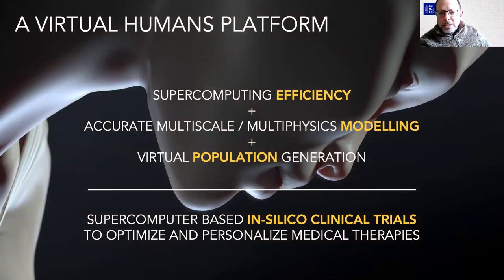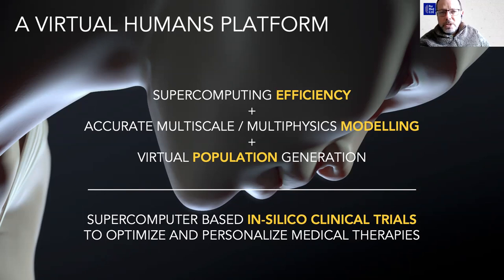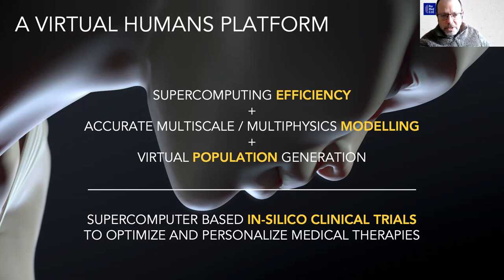What we are developing is a virtual humans platform. By combining three things: first, supercomputing efficiency in order to use large-scale computing facilities; second, accurate multi-scale, multi-physics modeling, something that can allow you to simulate very complex problems; and third, virtual population generation. This third one is very important because it will allow you to create virtual humans on which you can test a given therapy. By combining these three things, what we are going to have is a supercomputer-based in-silico clinical trials platform to optimize and personalize different medical therapies.